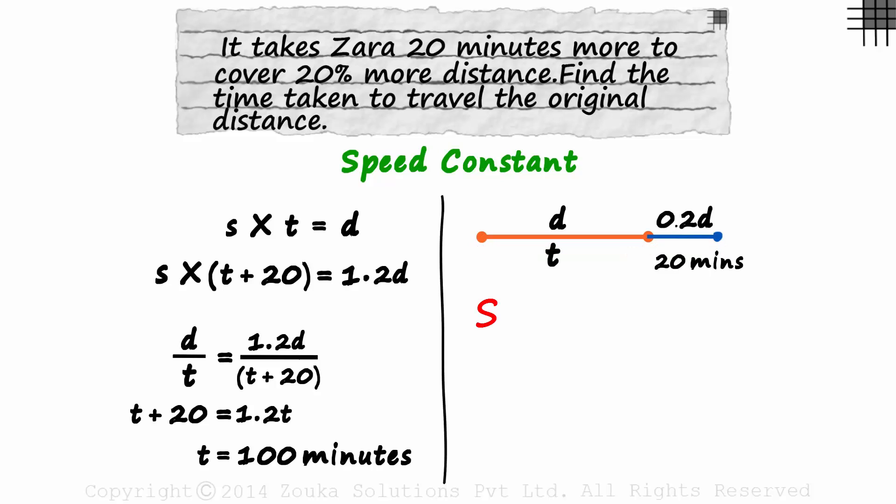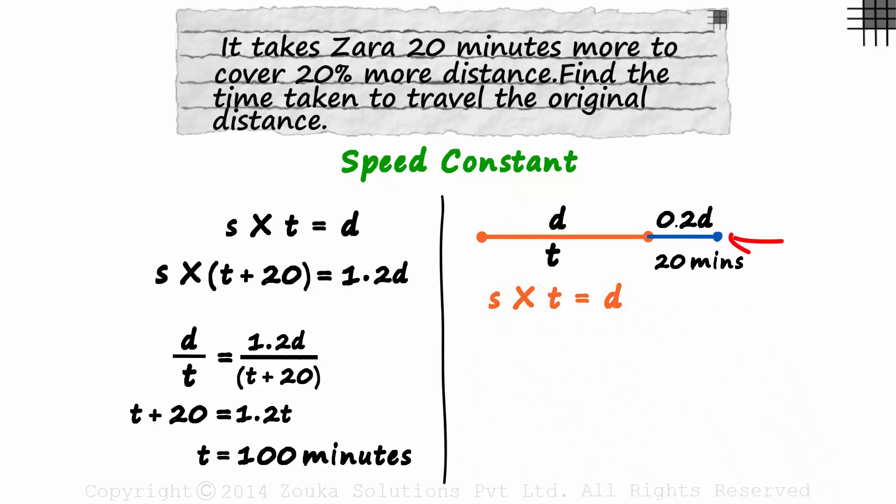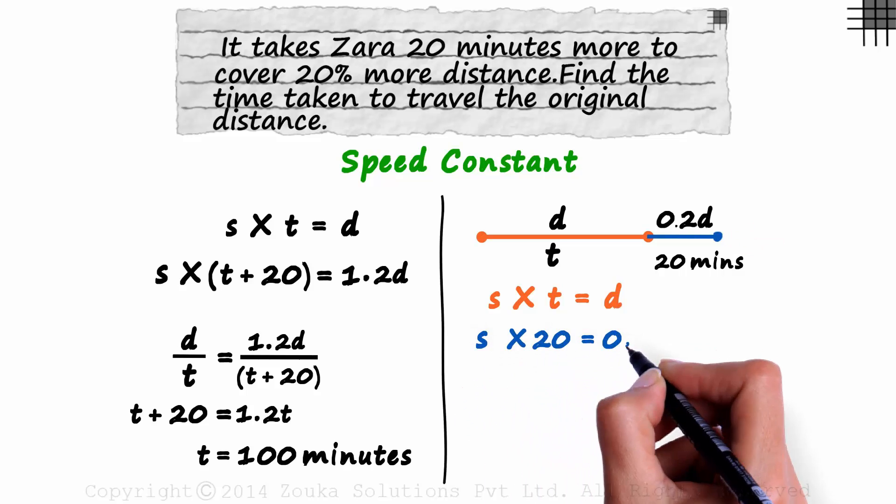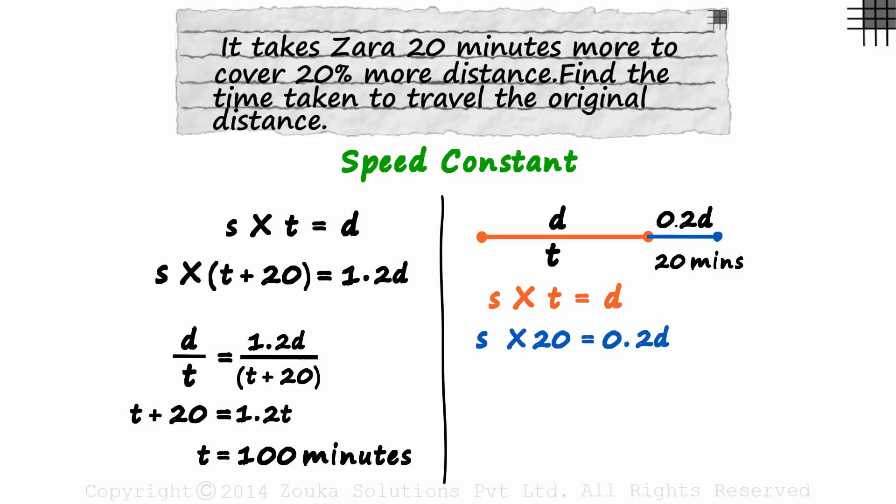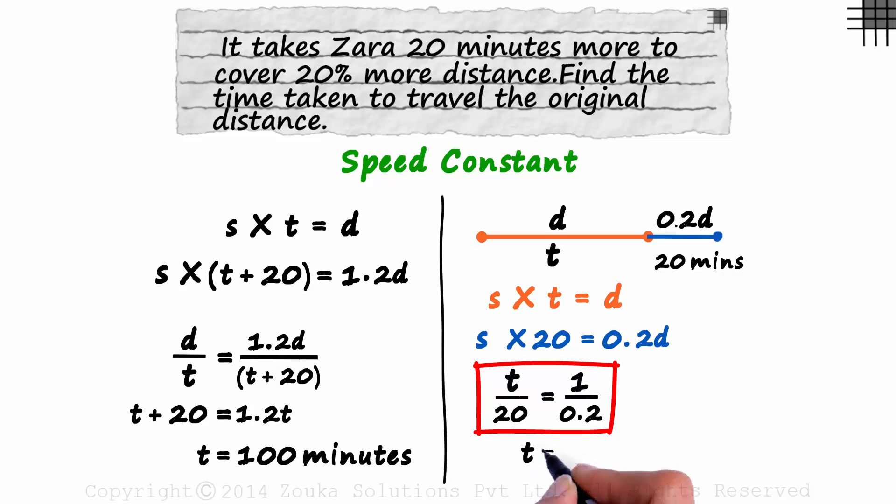Let's assume her speed is S. For the orange part, we can say that S times T is equal to D. And for the blue part, we can say that S times 20 is equal to 0.2D. If we divide the two equations, S and D will get cancelled. We will get T over 20 equal to 1 over 0.2. This will also give us the value of T as 100 minutes. You can choose whichever method you are comfortable with.